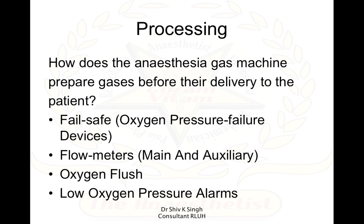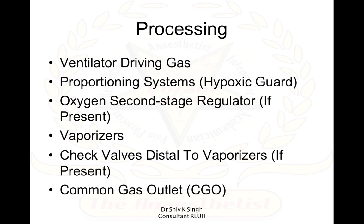Processing is how the anesthesia machine prepares gases before they are delivered to the patients. This includes safety features like fail-safe devices or oxygen pressure failure devices, low oxygen pressure alarms, and oxygen flushes. We also have flow meters in the machines, systems to drive ventilators, hypoxic guards as another safety feature, second stage regulators to reduce pressure within the system, check valves distal to the vaporizers that prevent back pressure into the vaporizer, and the vaporizer itself.